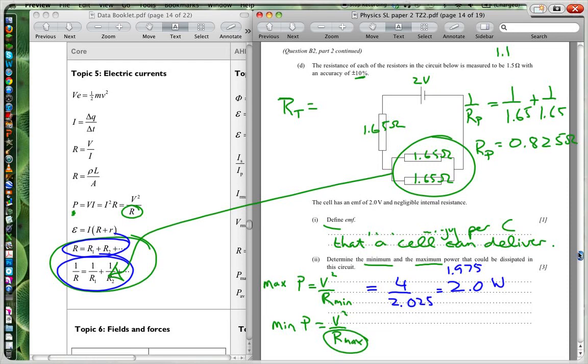So therefore your total resistance, this can be replaced by one resistor of 0.825 ohms. So now it's going to be 1.65 plus 0.825. That will give you the total resistance now, the maximum. So I add plus 1.65 to that. And I get 2.475 ohms. So I put that into here, 4 divided by 2.475.